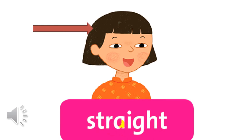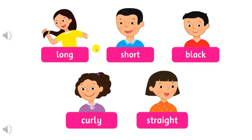Now next activity: you will listen and point. Listening 106 — listen and point: long, short, black, curly, straight, curly, long, black, straight, short. Listen and repeat: long, short, black, curly, straight.